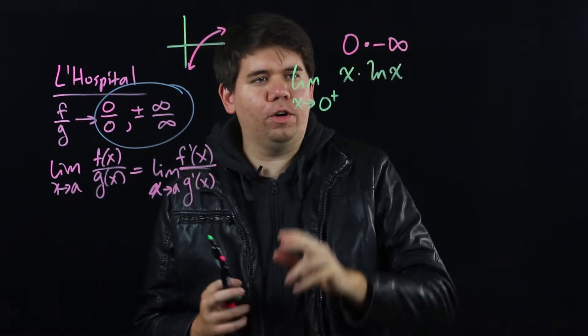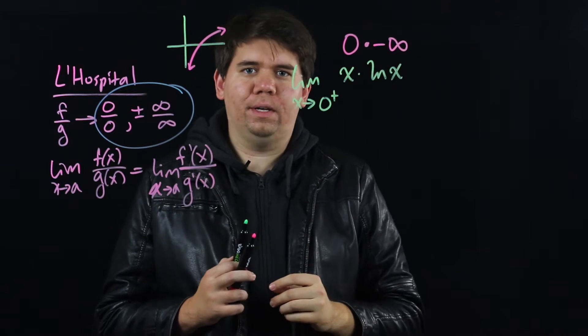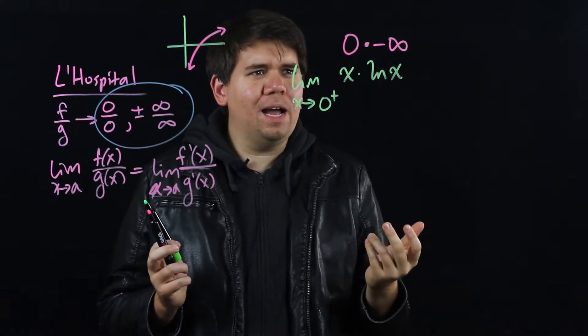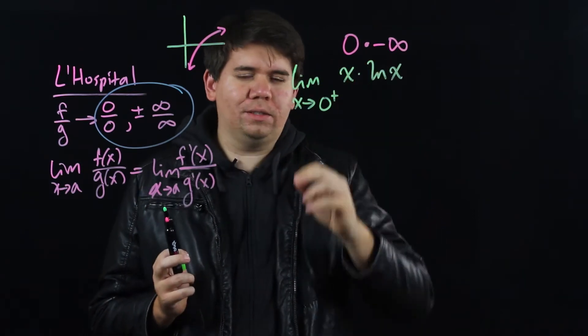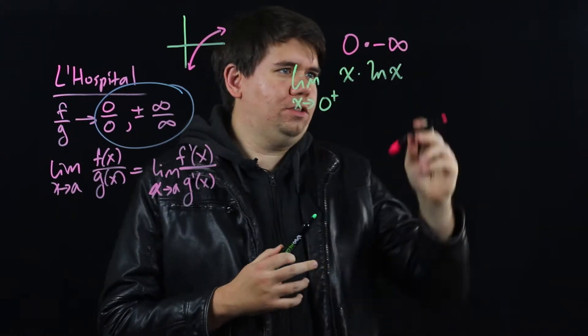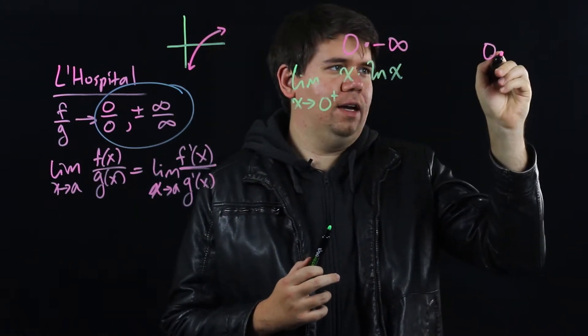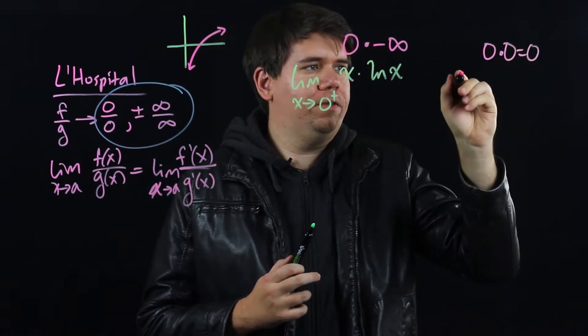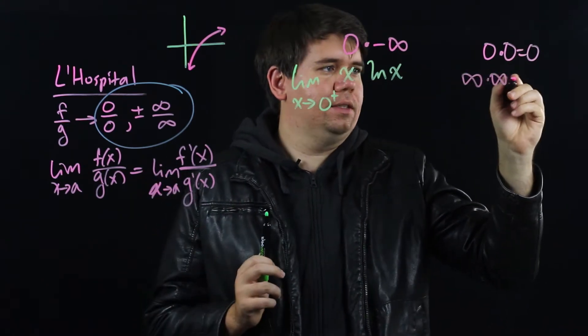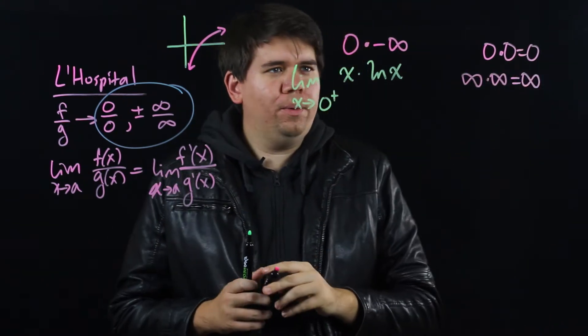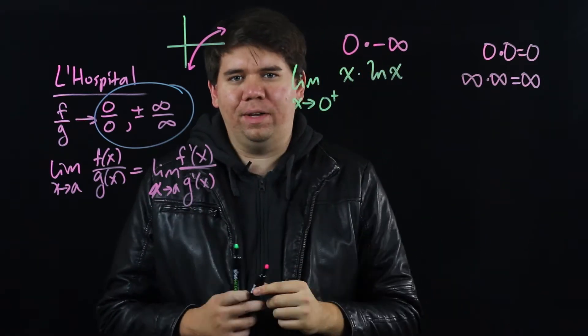So here we have something of the form 0 times negative infinity. And if you stop and you think about it, it shouldn't be obvious what this is going to come out to be. If it was just 0 times 0, yeah, obvious, that's just 0. Or if it's infinity times infinity, obvious, that's infinity. But what is 0 times an infinity?